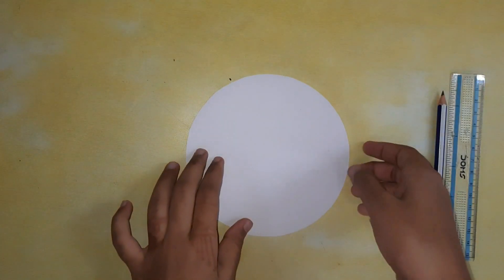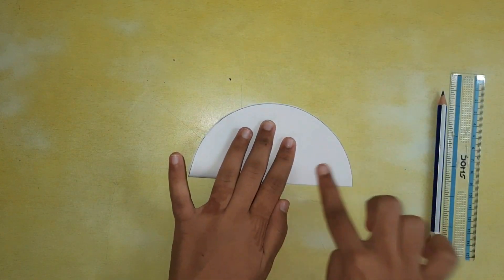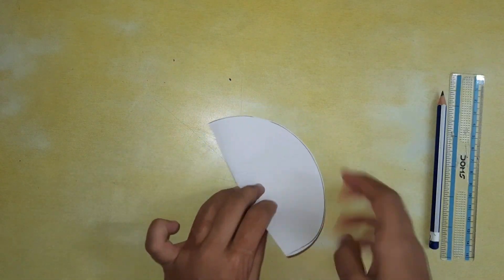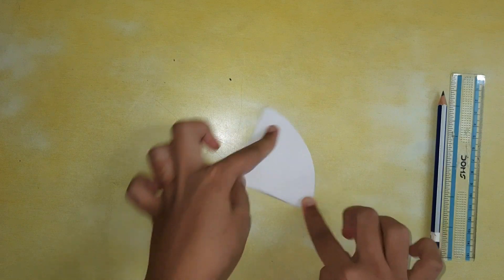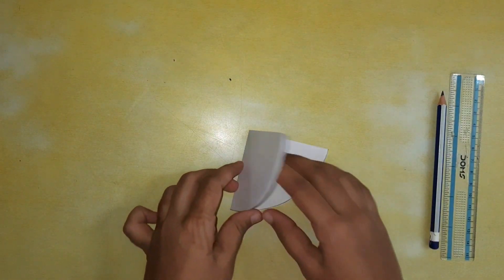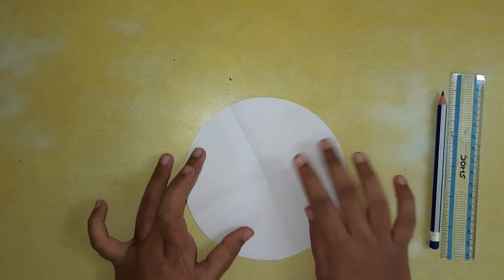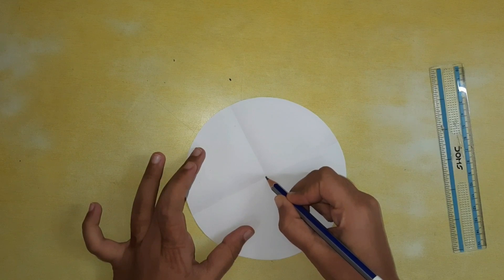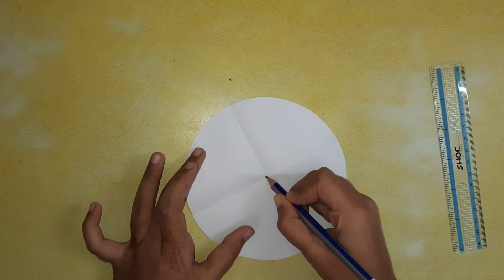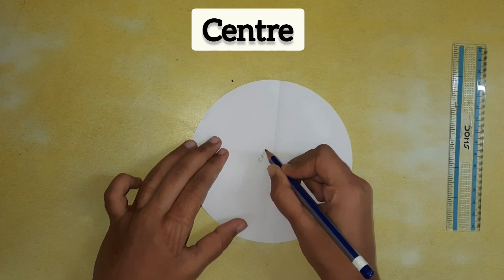Now let's take another circle and fold it into half, then again into half like this. So children, this point here is known as the center. Let's trace it with a pencil. This point is known as the center.